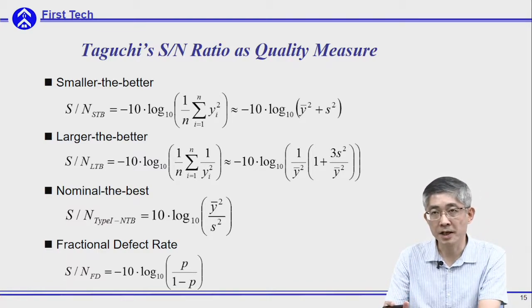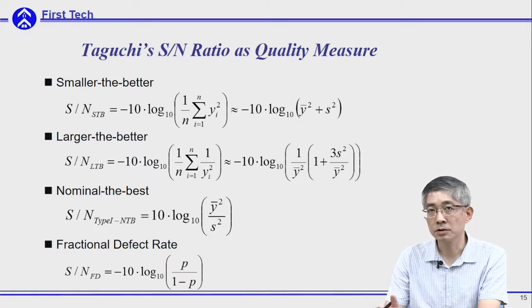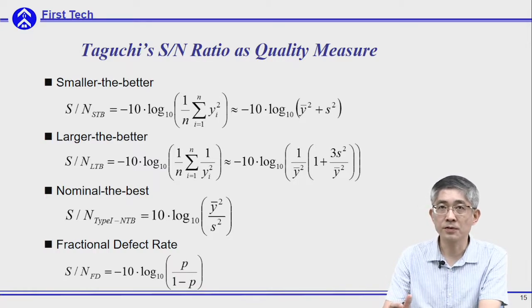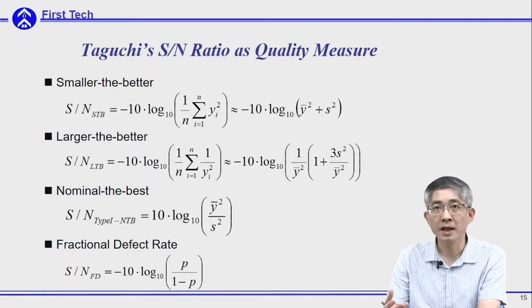This is a summary for all cases: larger-the-better, smaller-the-better, nominal-the-best, and fractional defect rate — all expressed as SN ratios. Taguchi uses this SN ratio as the quality measure in future design. A larger SN ratio stands for better average performance and better conformance.